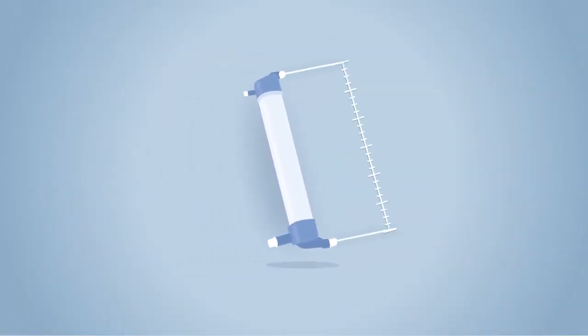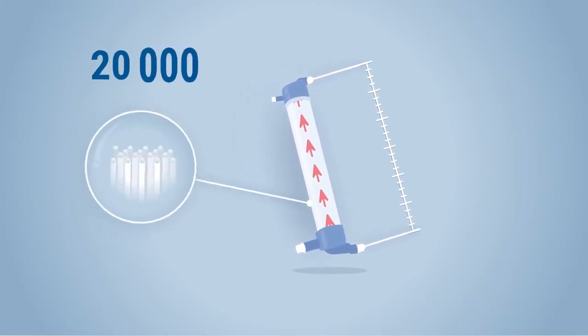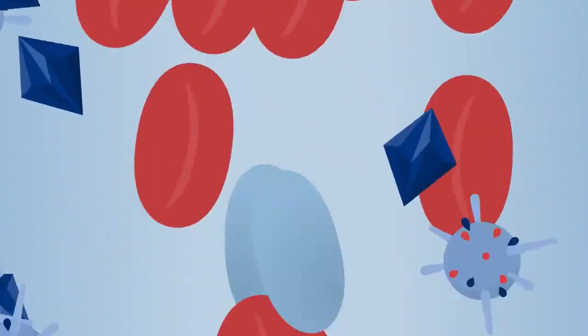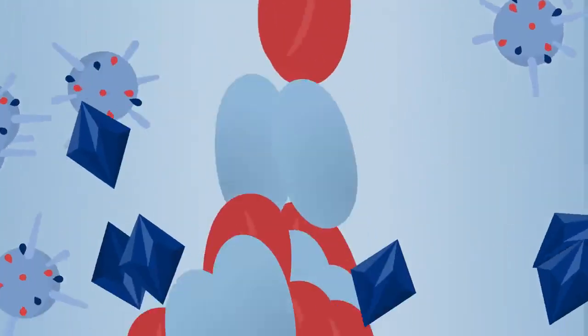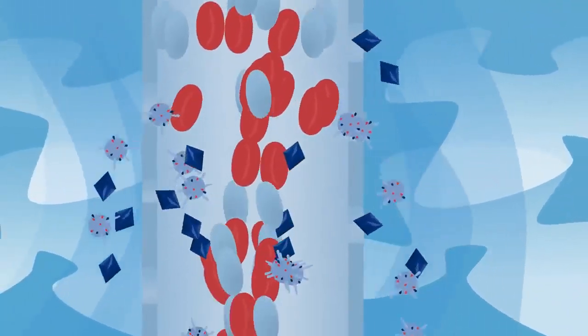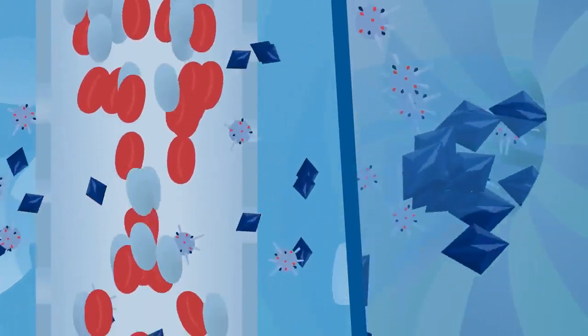Inside a plastic tube 30 centimeters long, about 12 inches, the blood flows through up to 20,000 hair fine fibers. Microscopic pores in the fibers filter out metabolic waste and excess water, which the dialysis fluid then carries away.